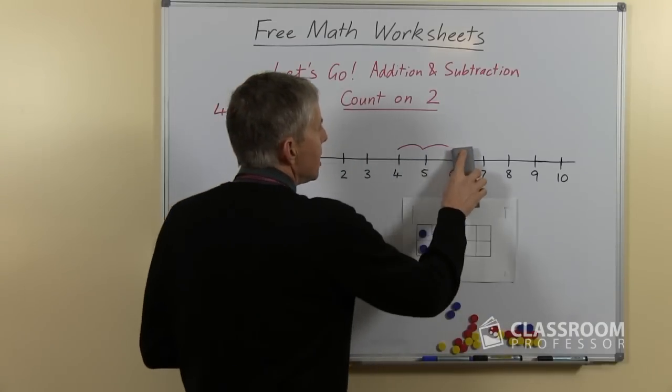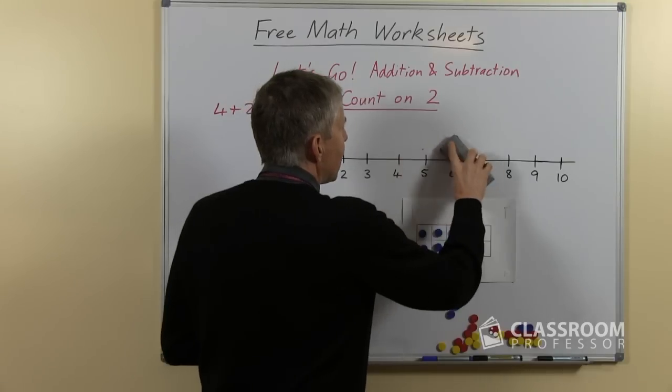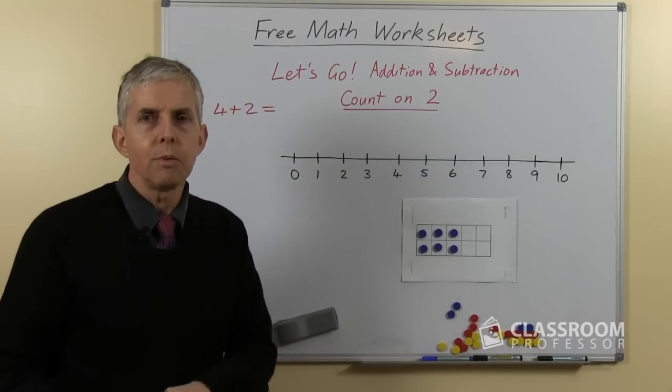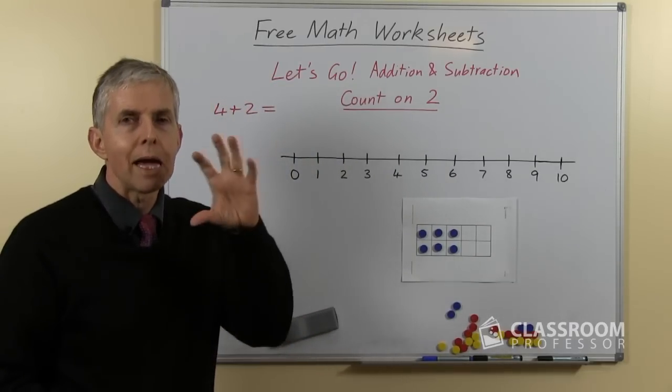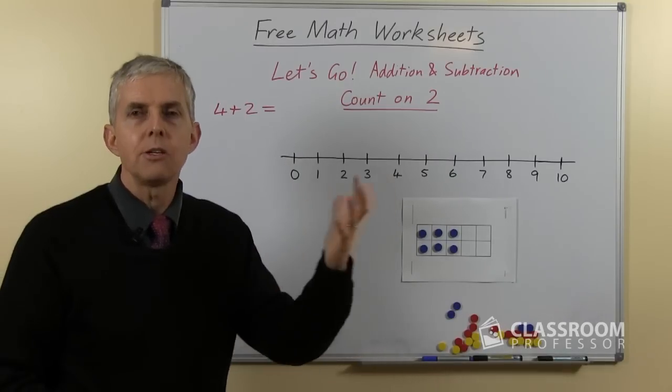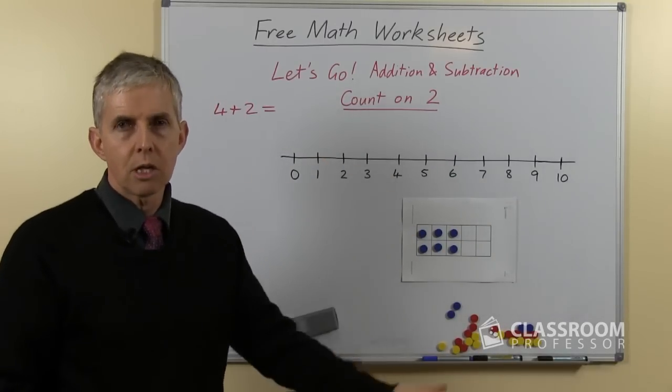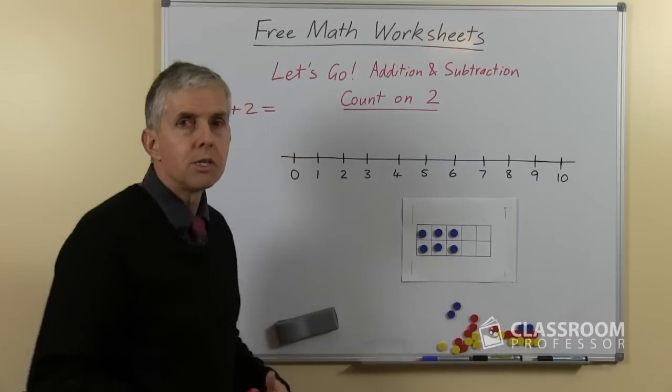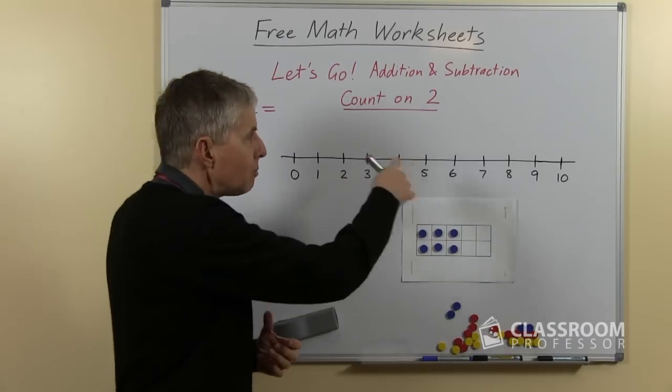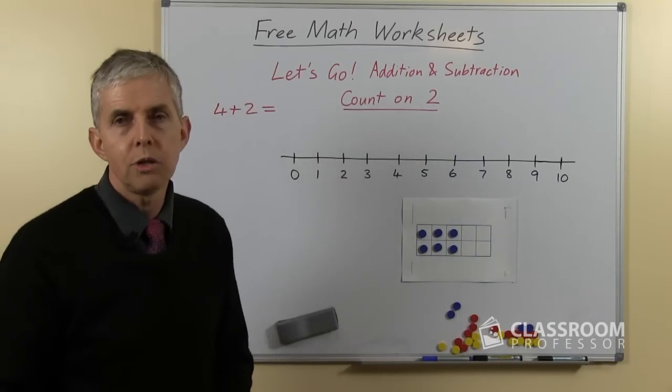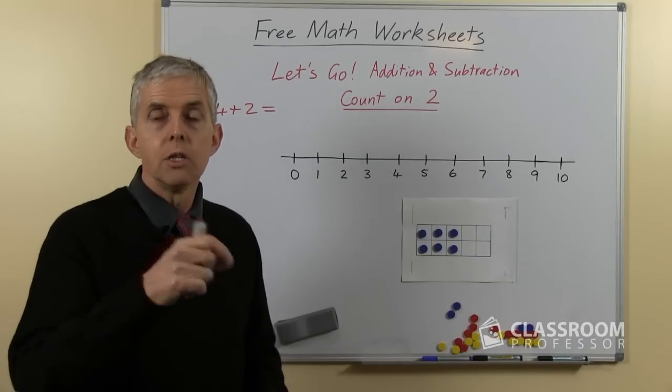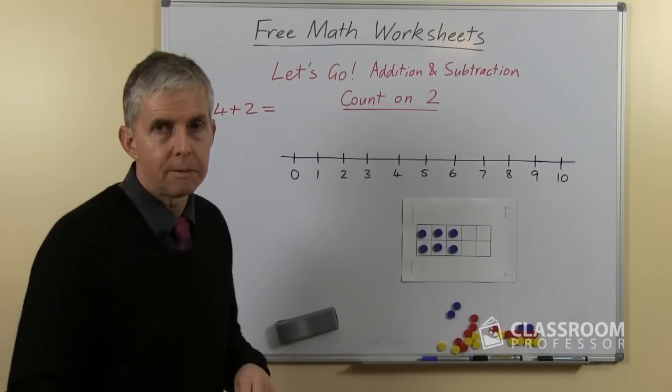Now with the number line it's quite easy to do and with drawing the lines you can find the answer, but what we really want to be able to do is to imagine the jumps, imagine the counting on 2 and be able to come up with the answer without using the number line. So as you get better at this, use the number line to start with, but after a while you will become familiar with the numbers and you should be able to do it without actually drawing the lines and even without the number line.